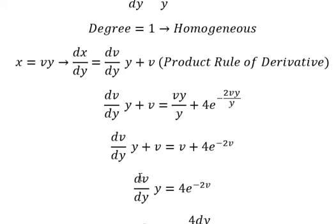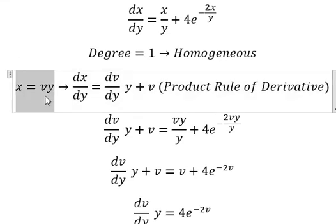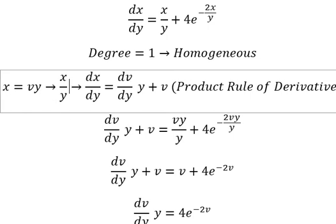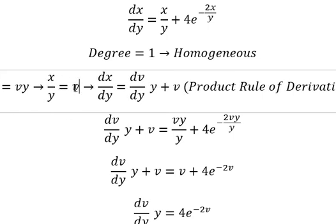About v, that is about this one. So we need to divide both sides by y. And we need to change v into x over y.